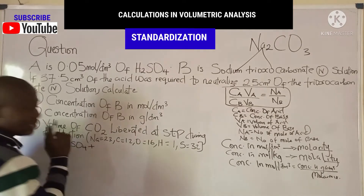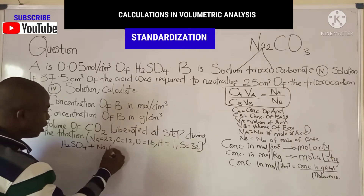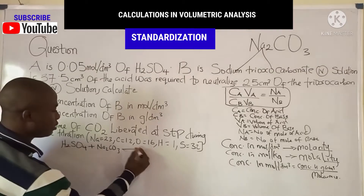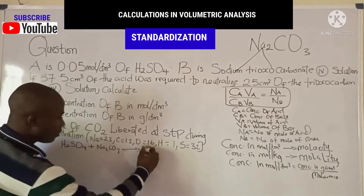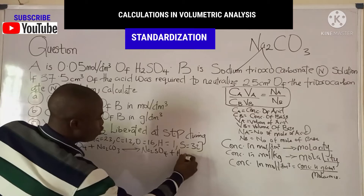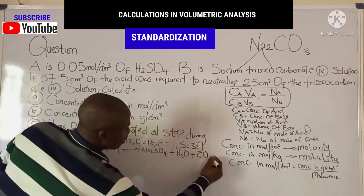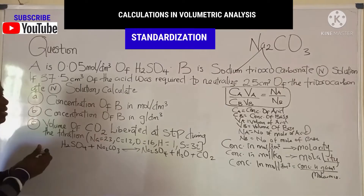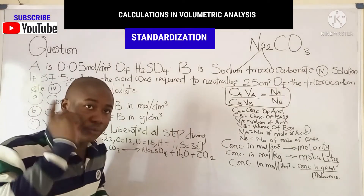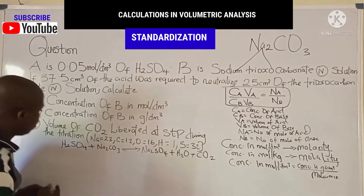The balanced equation is: H₂SO₄ + Na₂CO₃ → Na₂SO₄ + H₂O + CO₂. Carbon dioxide gas is liberated. This is the balanced equation for the reaction.